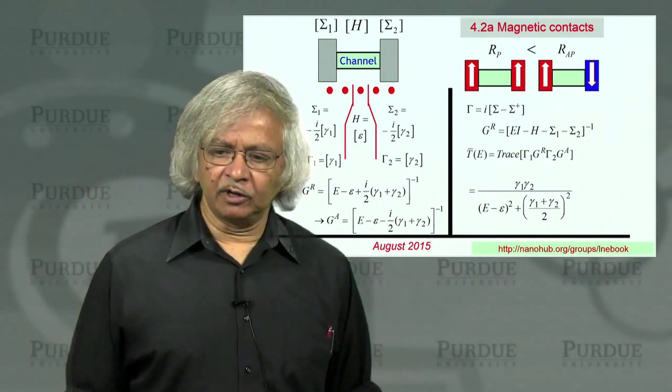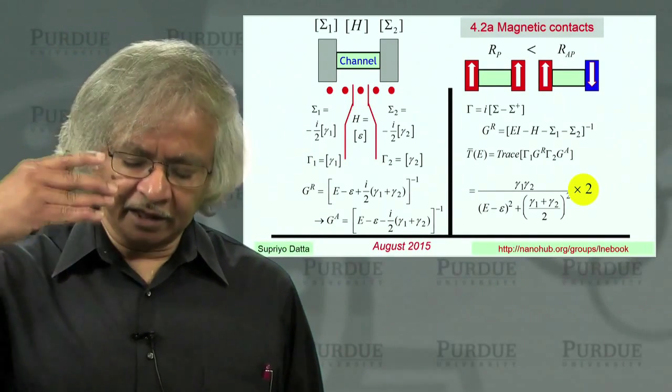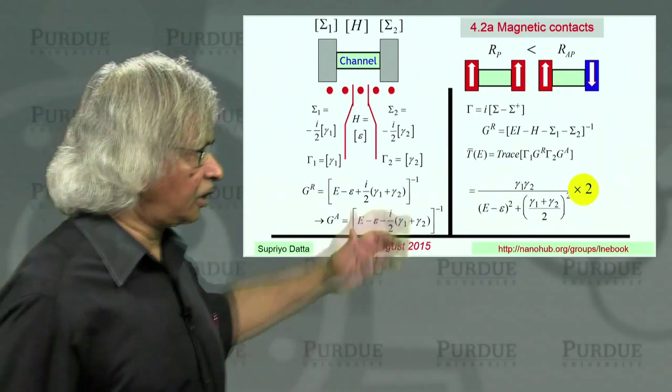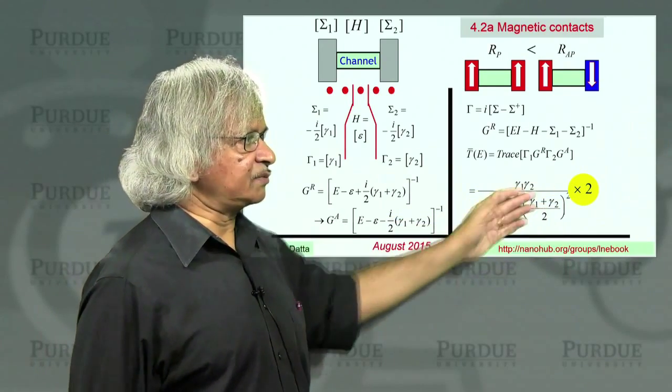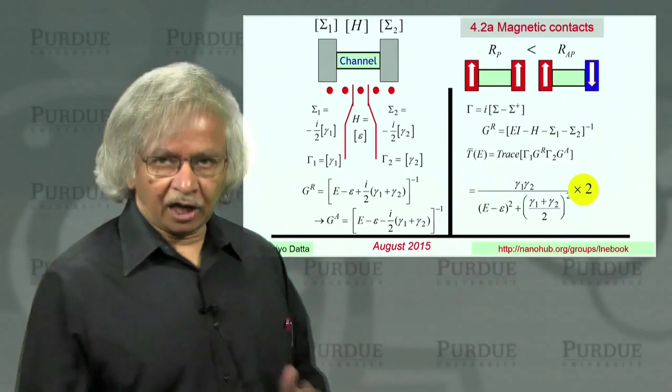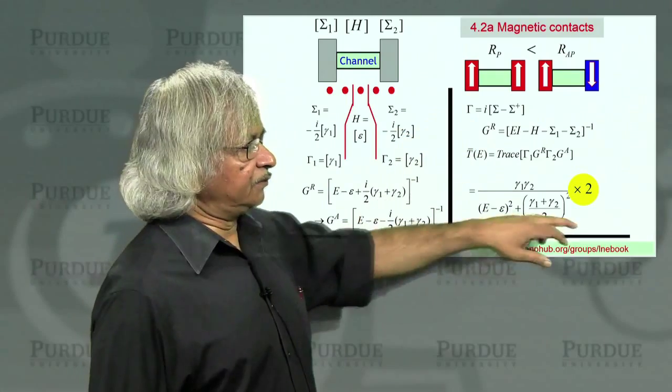You see that gamma 1 is the gamma 1 here. That gamma 2 is that gamma 2. And Gr times Ga, that's like multiplying this with this. One is the conjugate of the other. So you get the magnitude squared of that quantity, which is e minus epsilon squared plus gamma 1 plus gamma 2 over 2 squared. So that's the transmission. And usually what we do is we then multiply it by 2.